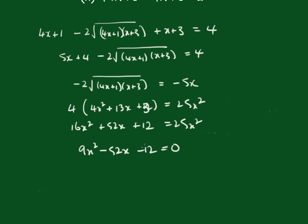That's exactly the same equation we had before. The solutions are x equals 6 and x equals minus 2 ninths.